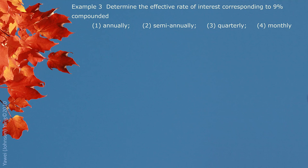Example 3: Determine the effective rate of interest corresponding to 9% compounded in four situations: annually, semiannually, quarterly, and monthly. We find the effective interest rate for each situation. For the first one, we don't actually need to calculate since it is compounded annually, so 9% itself is the effective interest rate.